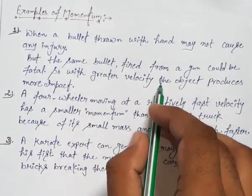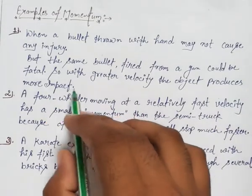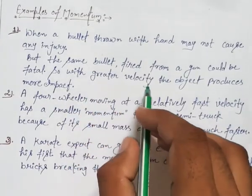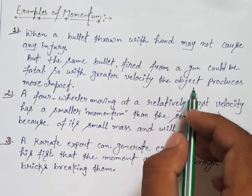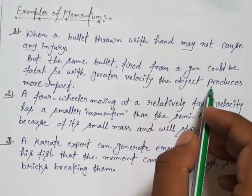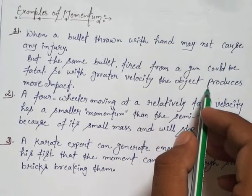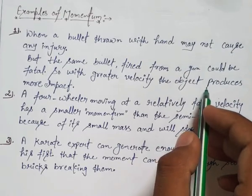With greater velocity, the object produces more impact. हम ये कह सकते हैं कि अगर velocity ज्यादा होती है, तो ये ज्यादा से ज्यादा impact produce करता है — यानी ज्यादा से ज्यादा चोट करता है.